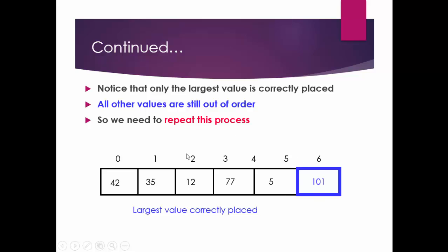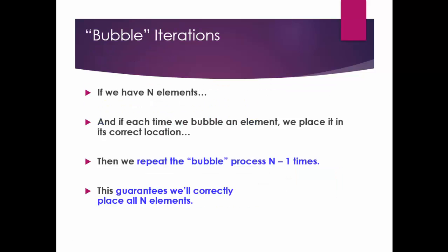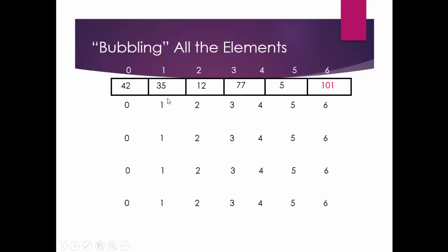The largest element is at last, but since the other elements of the array are not sorted, we will have to continue the process. How many iterations are needed? If we have n elements, we will have to repeat bubble sort n minus 1 times — because each time we place one element at the end it is fixed, so we have one less iteration to do.